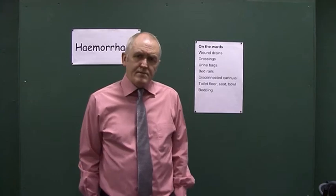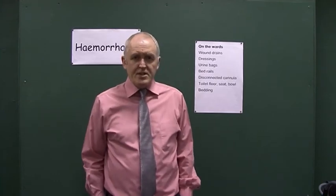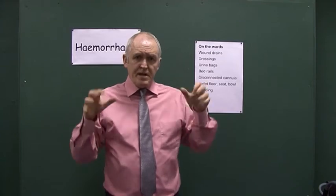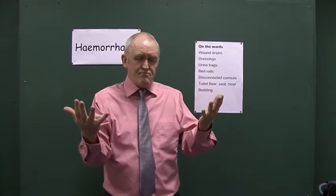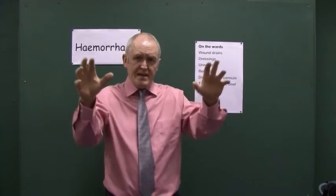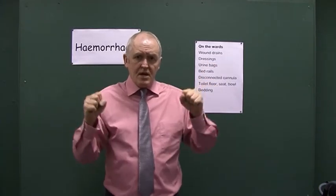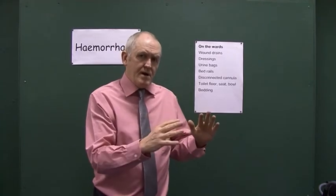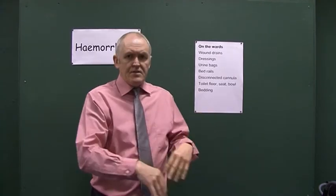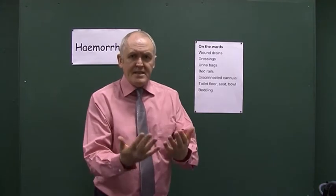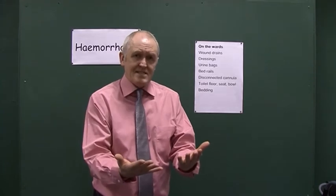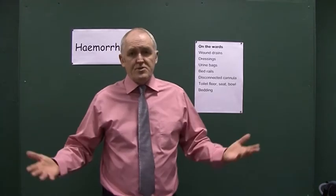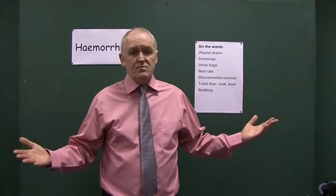Another time I've seen blood, especially in confused patients, is on bed rails. As the patient grabs the bed rails, blood gets from their hands onto the rails, and you're walking past and you just see some blood on the bed rail. Then you go to the bed and you see there's blood on the patient's hands, and when you pull back the bed sheet, you might find there's a pool of blood somewhere.